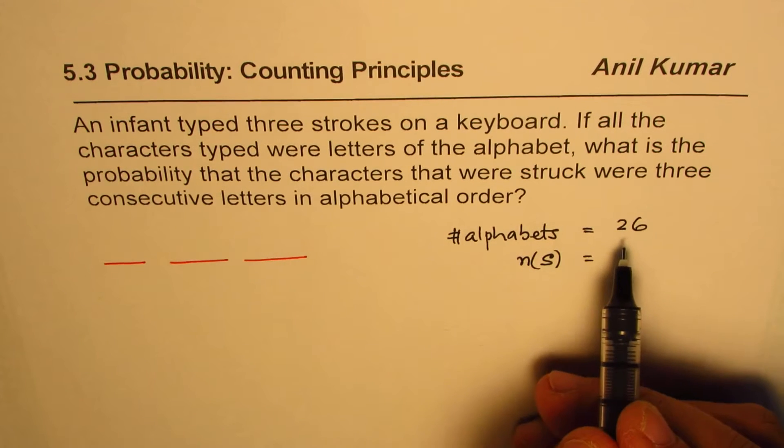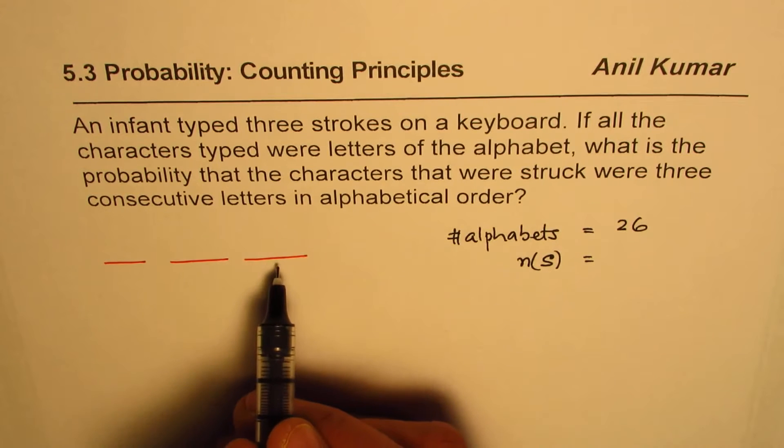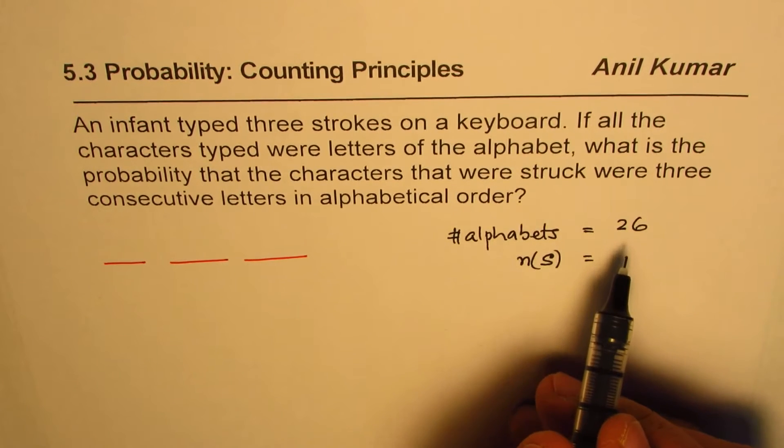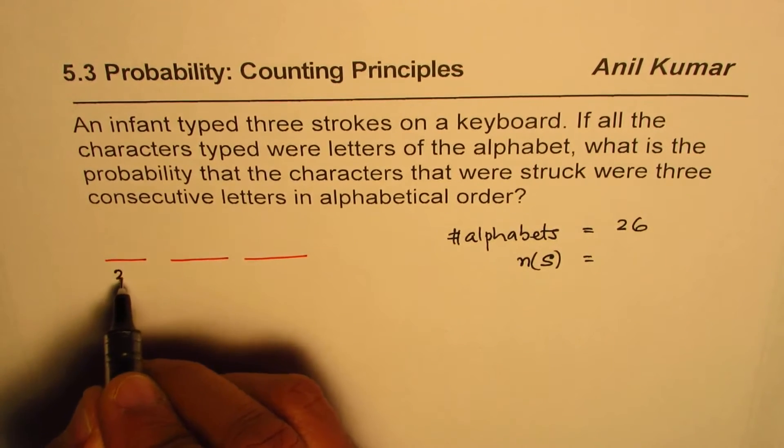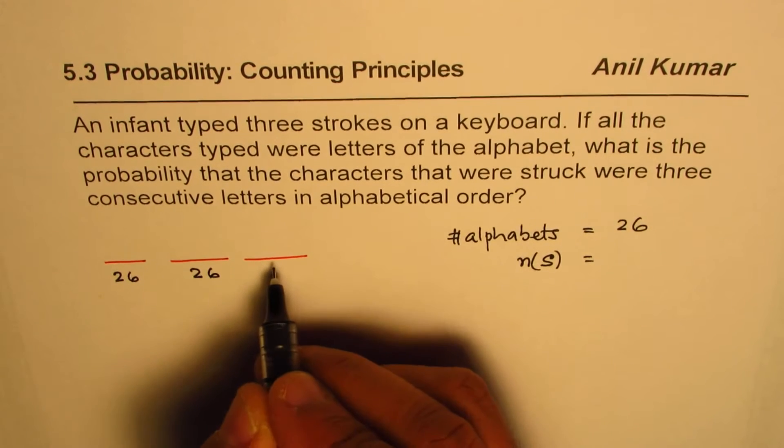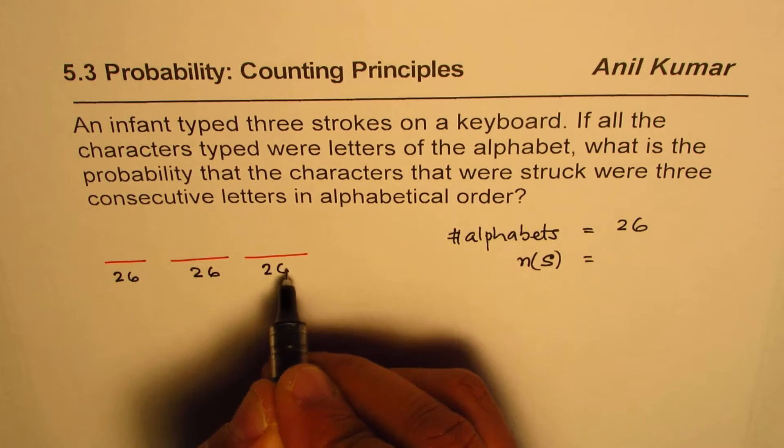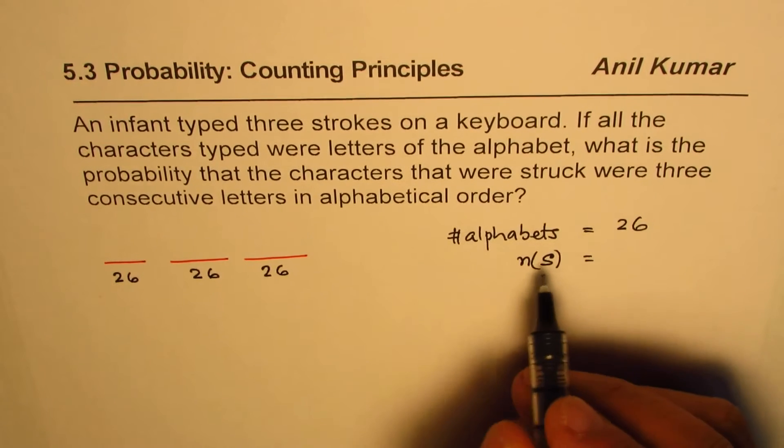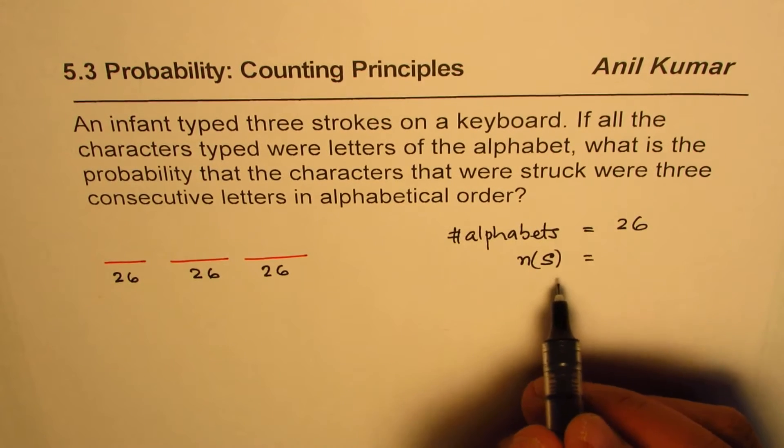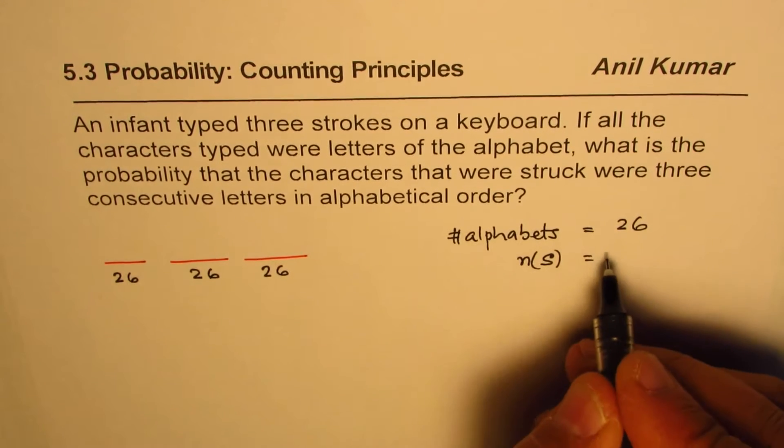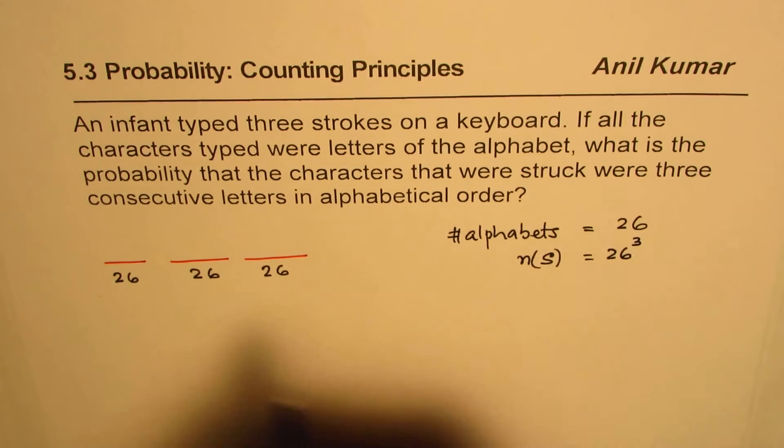So there are 26 alphabets. Now remember, if these are the three alphabets typed, then these alphabets could be repeated also. So in the first position, we could have 26. In the second, we could have 26, and in the third also we could have any out of 26. So that gives us the number of combinations for our sample space. So it is 26 to the power of 3.